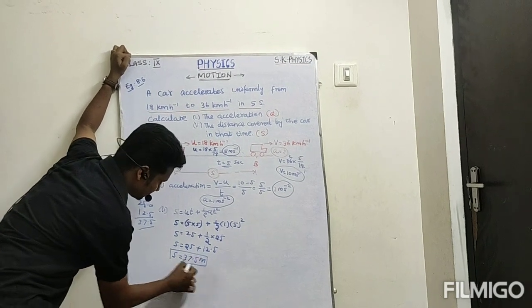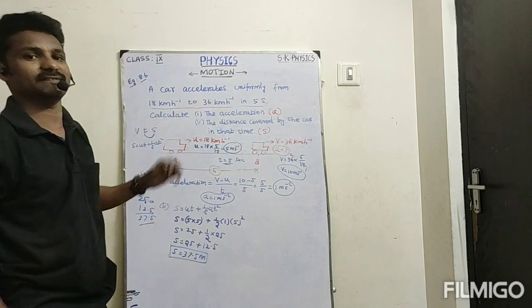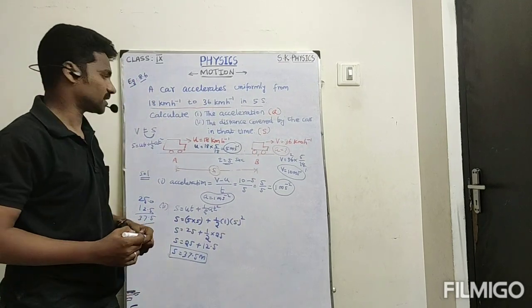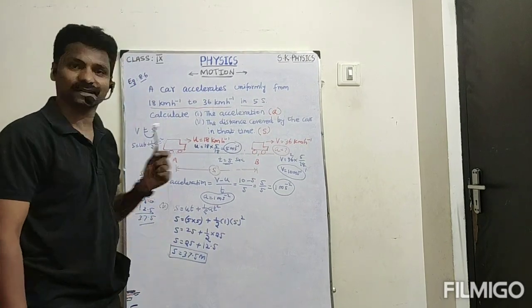So 37.5 meters is the distance covered in 5 seconds by the vehicle. Okay students, I hope you understood. Thank you.